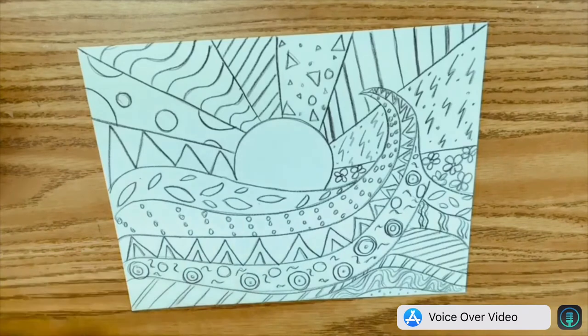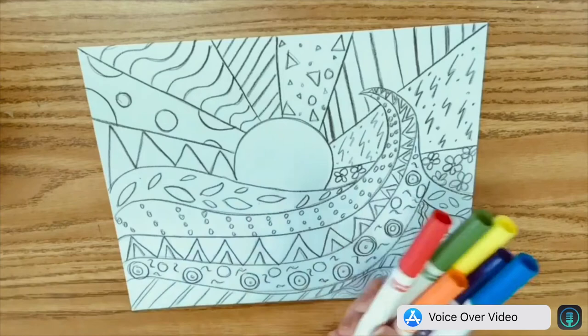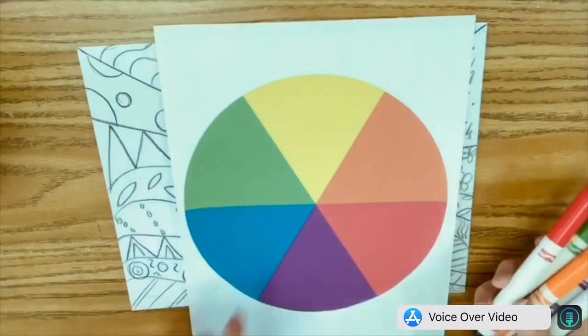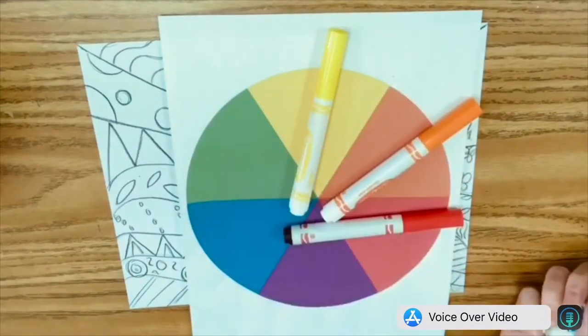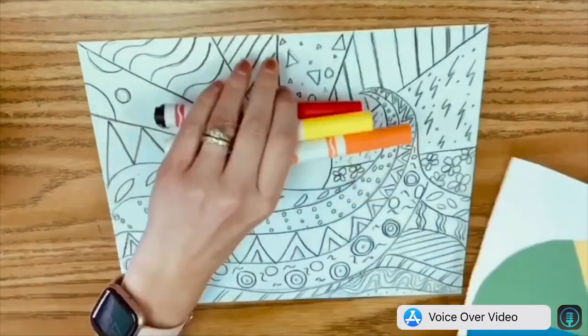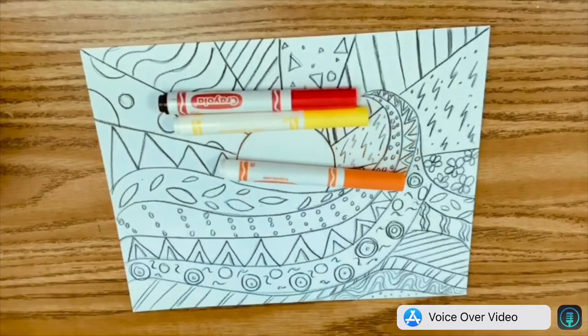Now we're going to use our warm colors and our cool colors. Using the color wheel, we're going to start with our warm colors, which are red, yellow, and orange. These are what we're going to use to color the sun and its rays.